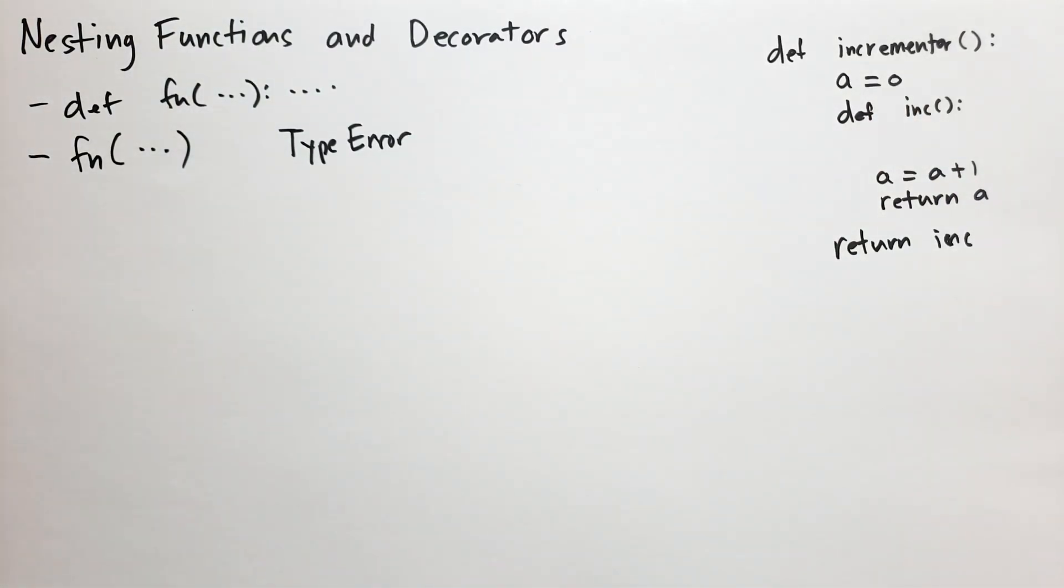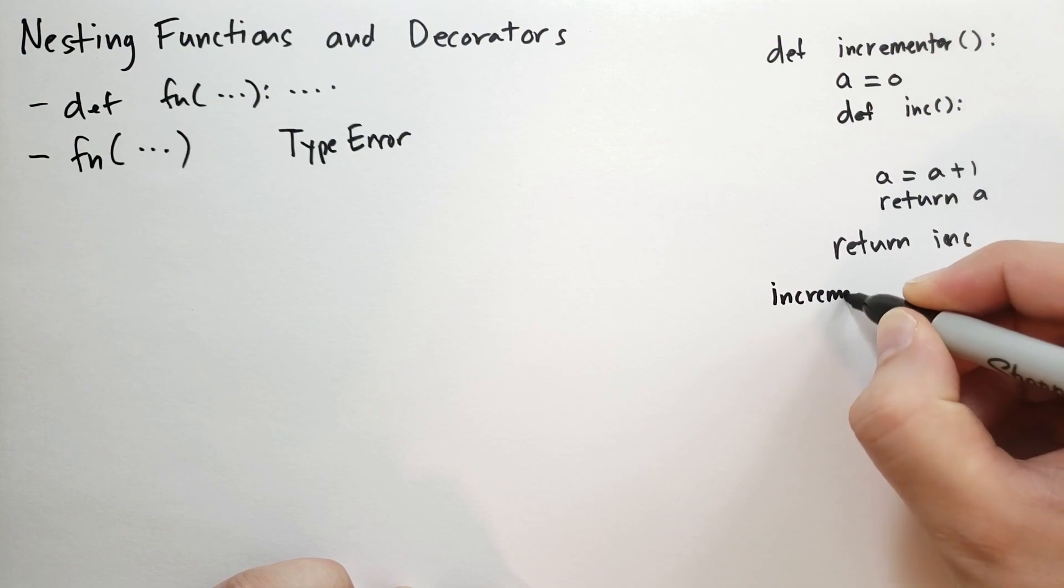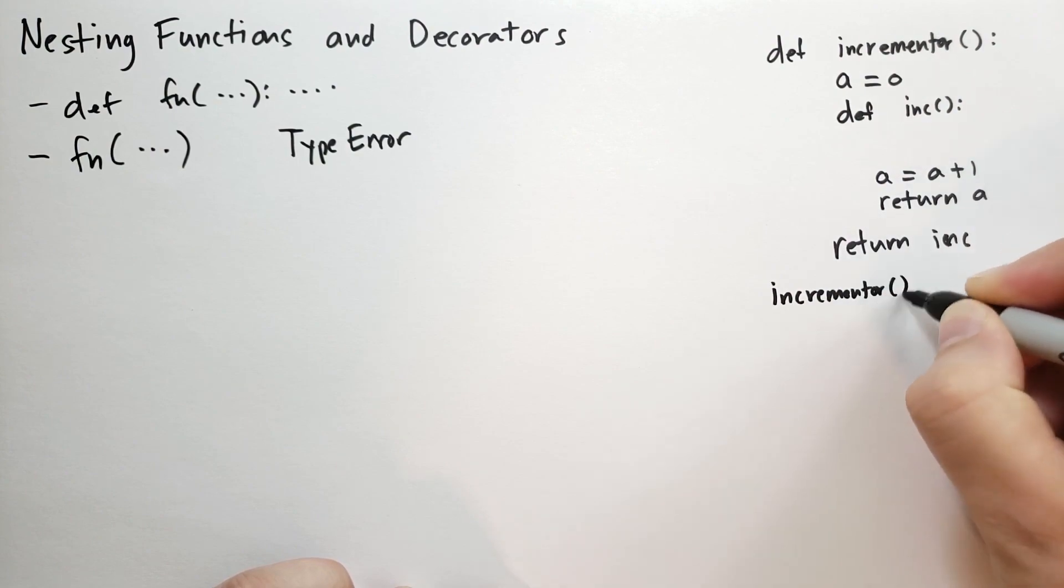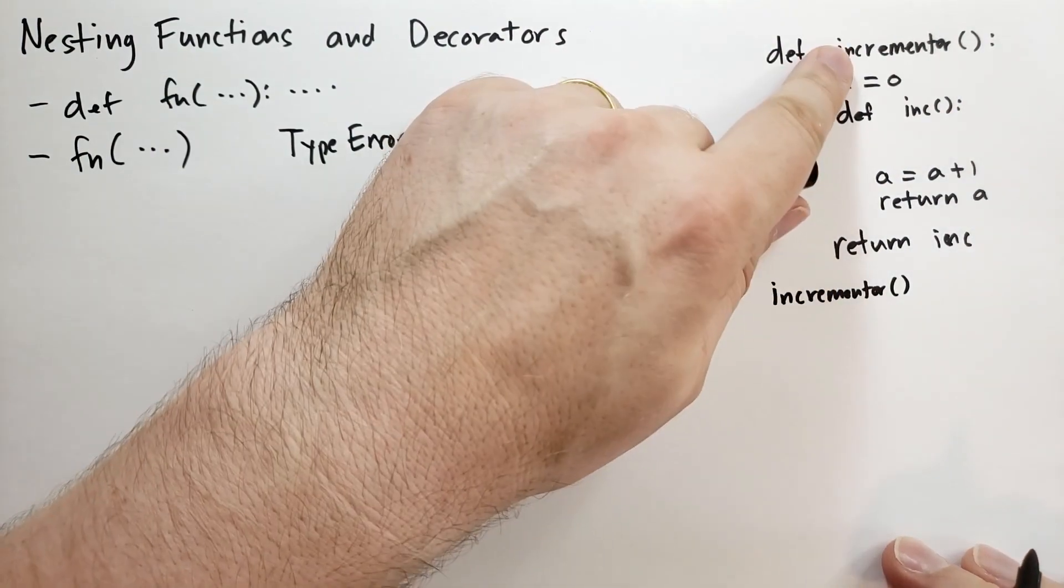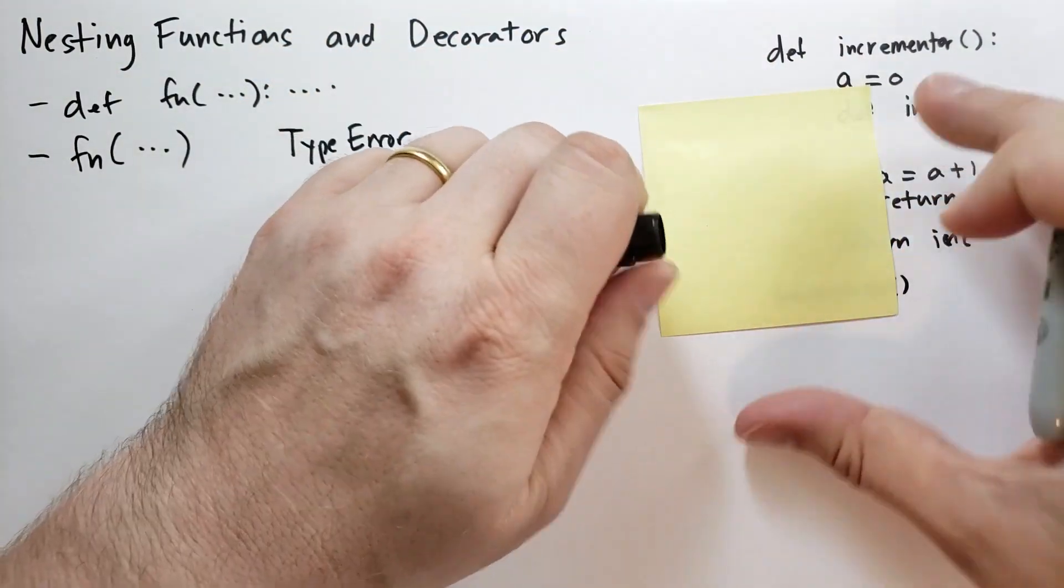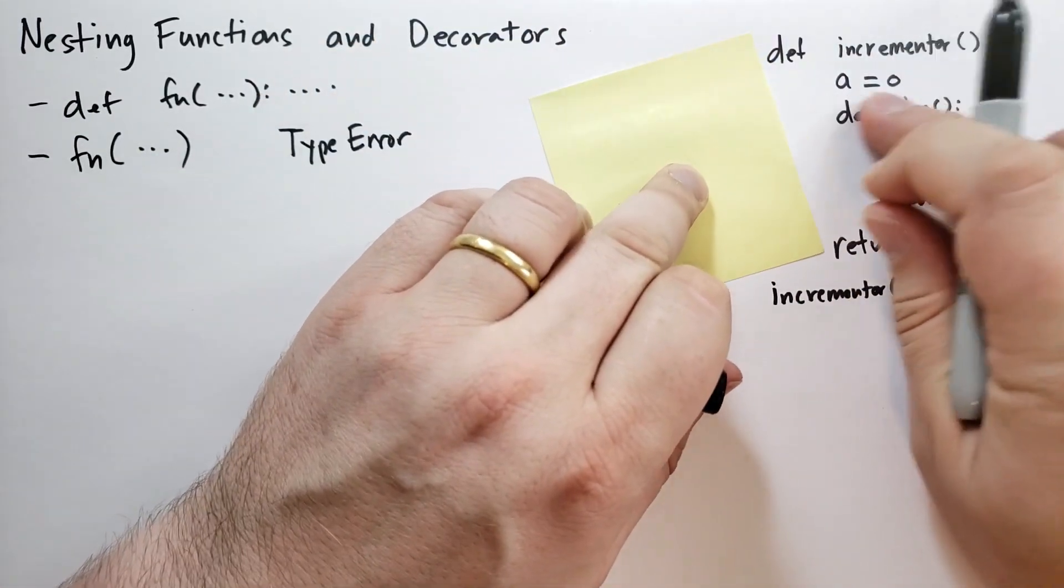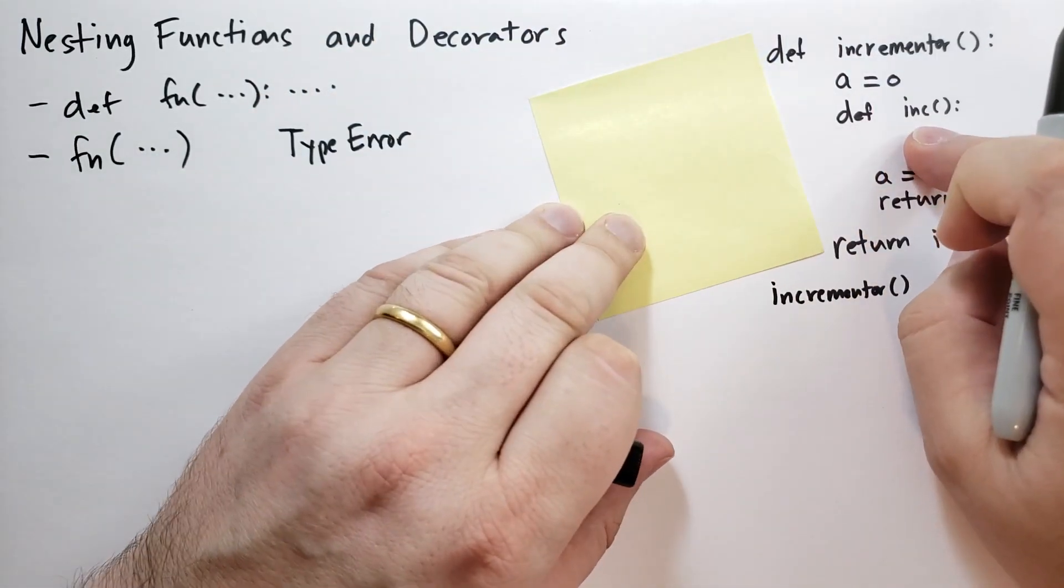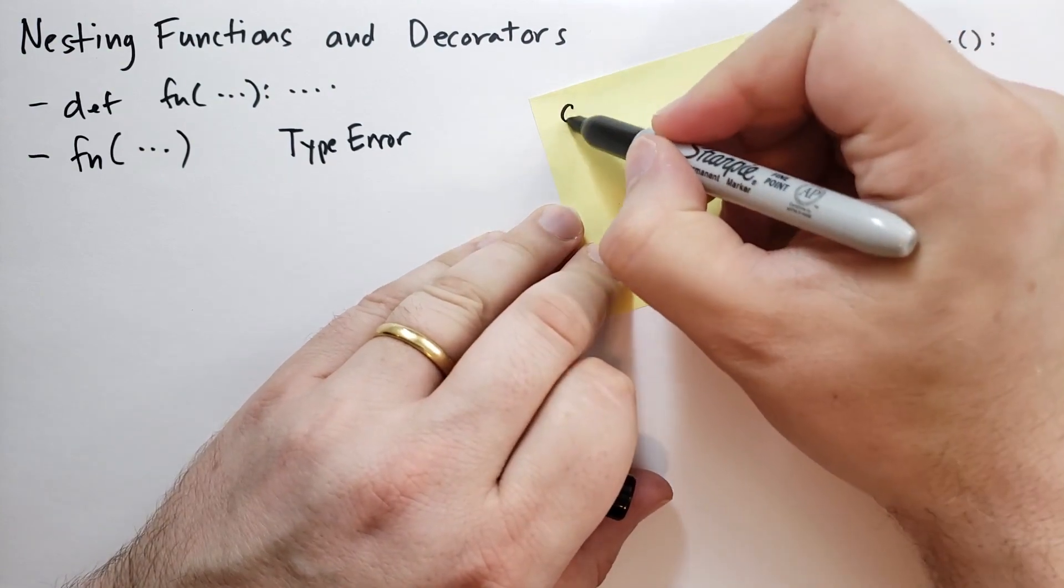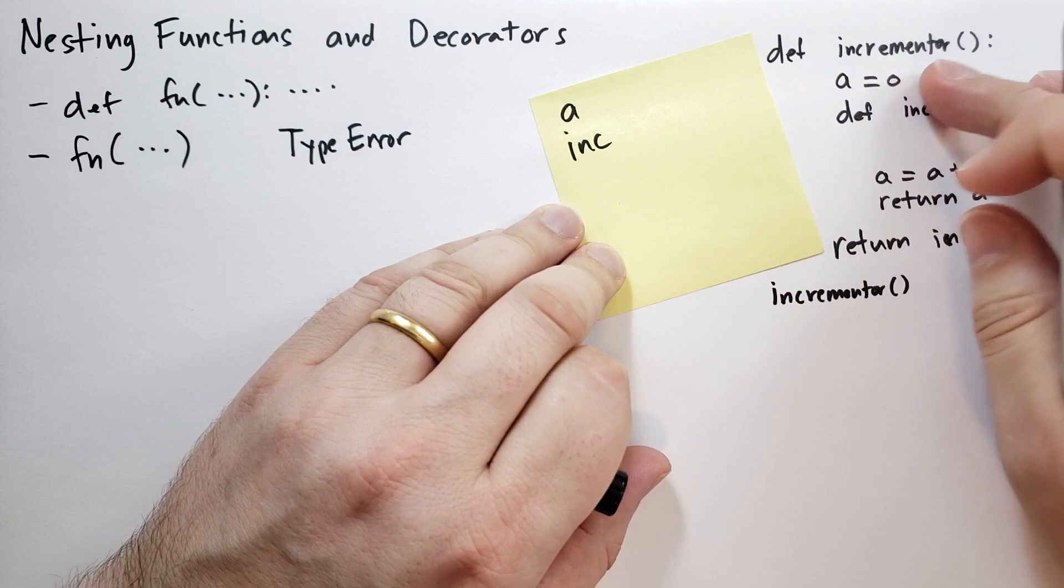So what's going on here when you call incrementor, so let's go ahead and have some sample code down here. We're going to say incrementor. This is going to call this function with a new namespace that's empty, that's blank. It actually reserves a spot for a because it sees that in this function there is an assigned statement for the variable a. It also reserves a spot for inc, so we have a and we have inc reserved.